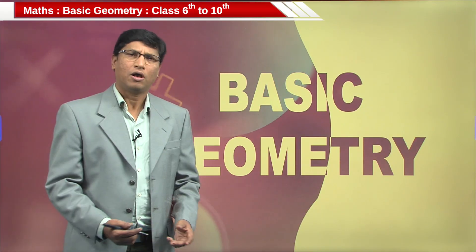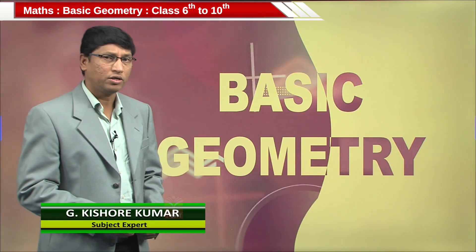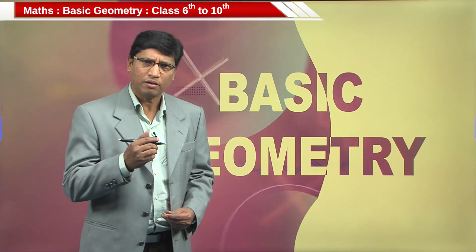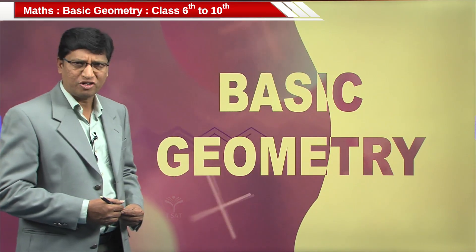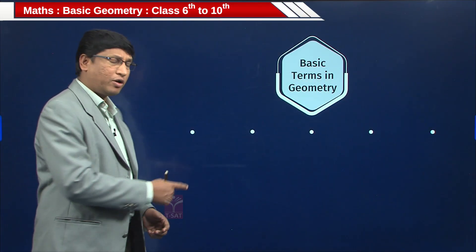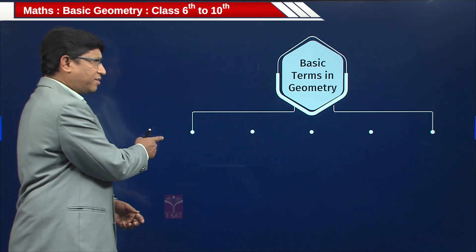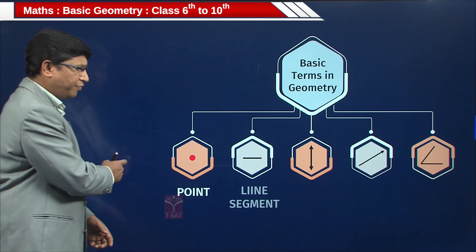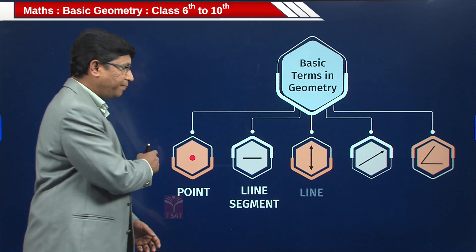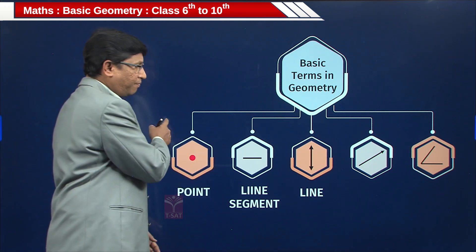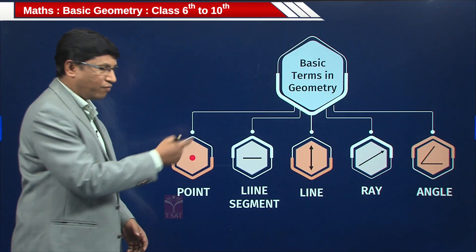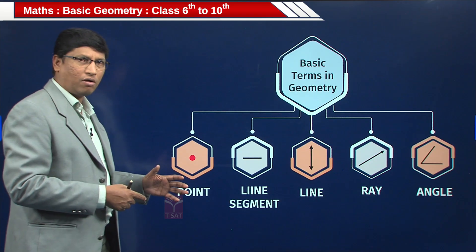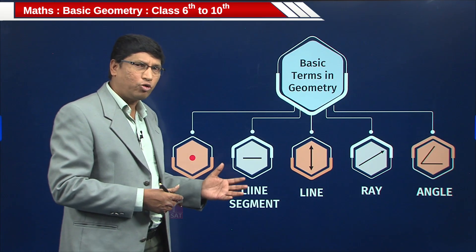Hello children, welcome to the digital class. In today's topic we are going to learn about basic geometry — specifically the prerequisites. We are going to learn five basic terms: the first one is a point, then a line segment, then a line, then a ray, and finally an angle. These are the five basic terms we are going to learn in our today's session.